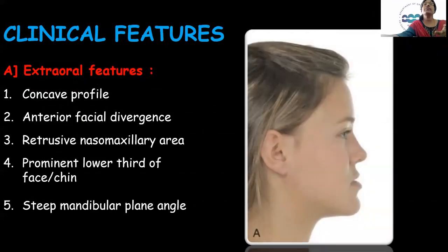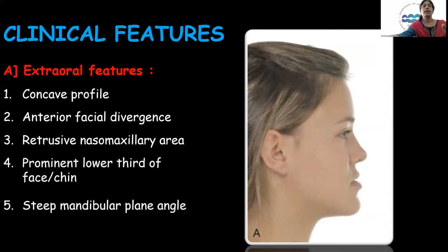Coming to the clinical features of Class 3 malocclusion, we can divide them into extra-oral and intra-oral features. The extra-oral features include a concave profile, anterior facial divergence, retrusive nasomaxillary area, a prominent chin, and a steep mandibular plane angle.